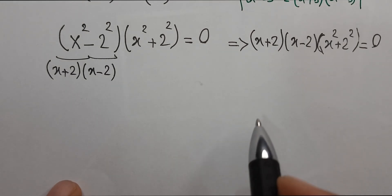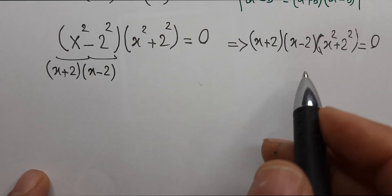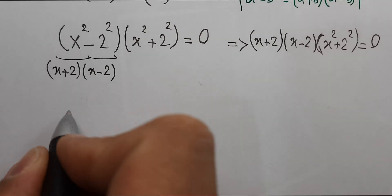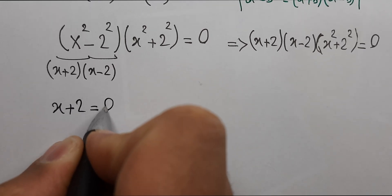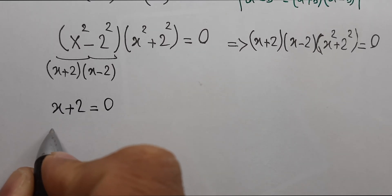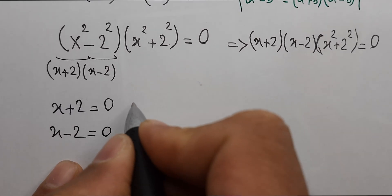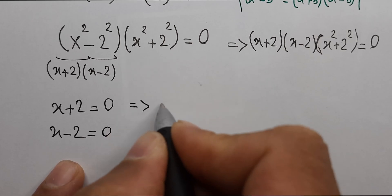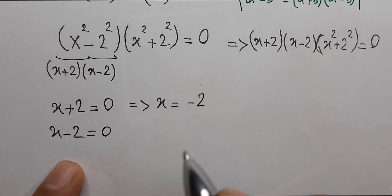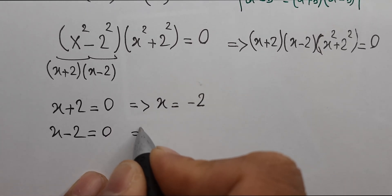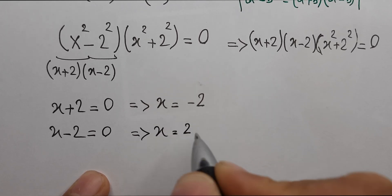We have two real solutions here: x plus 2 equals 0 gives x equals negative 2, and x minus 2 equals 0 gives x equals 2.